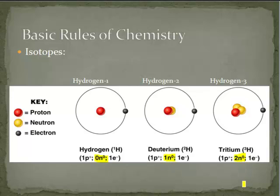These are called isotopes. They are all hydrogen because they each have one proton, but the mass number is different. Hydrogen one has a mass number of one, hydrogen two has a mass number of two, and hydrogen three has a mass number of three. If you change the number of neutrons in an atom, we call that an isotope.